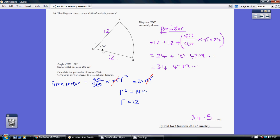Now we want to know the perimeter of this sector. So that's going to be a 12 length here and a 12 length here and we just need to add on this curvy bit here.